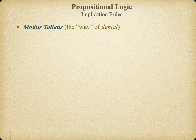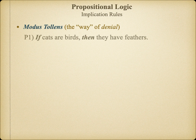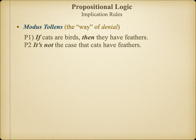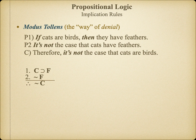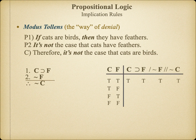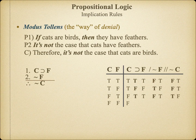Our second implication rule, or valid argument form, is modus tollens — the way of denial. Like modus ponens, we begin with a hypothetical claim, a material implication, but this time we deny the consequent. Since the consequent of any material implication is supposed to be a necessary condition for the antecedent, if we negate that condition, we negate the possibility of the antecedent. Symbolizing the argument and putting it in standard form makes the form very clear. Remember that in order to be invalid, we need at least one universe where all the premises are true but the conclusion is false. Since that doesn't exist, we know that this too is a valid argument form.